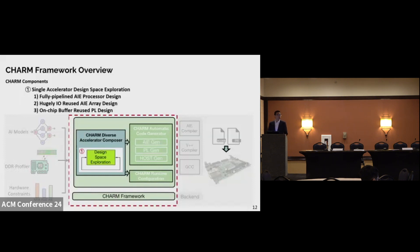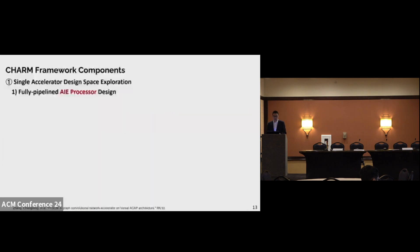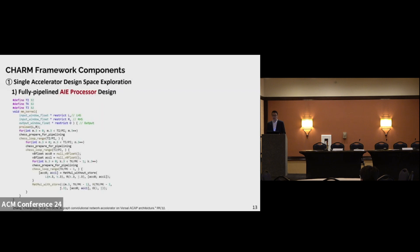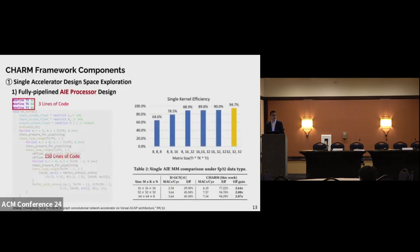We will highlight our CHARM diverse accelerator composer and the single accelerator DSE. For single accelerator design, we follow a bottom-up strategy, that is from single AIE, AIE array, PL to the whole system. After we dig into the hardware detail of the Versal ACAP architecture, we create a template that makes full use of the very long instruction word capability, so that instead of using 115 lines of code, the user can just input three lines of code to indicate the matrix size. We list the single AIE efficiency with different matrix sizes. Finally, we choose 32 by 32 by 32 as our single AIE design because of its high computation efficiency. Compared with the HLS N-work, our single AIE at the size of 32 by 32 by 32 achieves 2x gain.